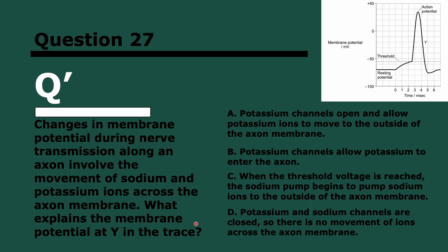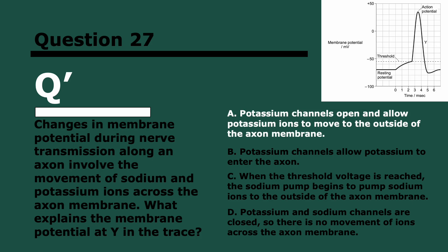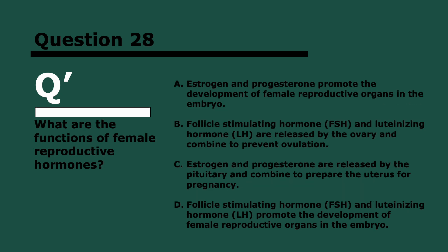Question 27, again from higher level. What explains the membrane potential at Y in the trace? Three, two, and one. The potassium channels open and allow potassium ions to move outside of the axonal membrane. What you're seeing at Y is that it's after the action potential, so membrane potential is going back down to baseline or actually below baseline. Remember, that's through the potassium channels. When it reaches the action potential, that's through the sodium. Afterwards, it's the potassium, and then it gets re-regulated again to start all over again.